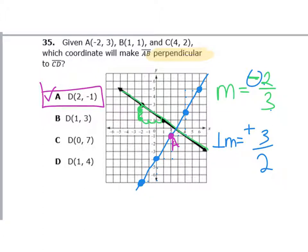If you want to verify: point B at (1, 3) is not on the line, point C at (0, 7) is way off, and point D at (1, 4) is also not on the line. So A is the correct answer. Go ahead and start working on the second part of your exam review, and tomorrow we'll review part 2 before your exams next week.